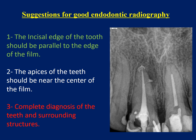Suggestions for good endodontic radiography: The incisal edge of the tooth should be parallel to the edge of the film. The apices of the teeth should be near the center of the film. This is important because it will give a very good view of the peri-apical region and allow us to see certain abnormalities or variations like lateral canals or a poorly obturated central incisor.